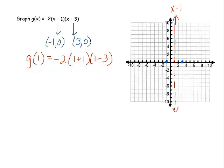So why am I plugging 1 in? I know that the vertex had to be on this line, and this line has an x value of 1. So if I want to get its y value, I've got to plug in 1 for x.